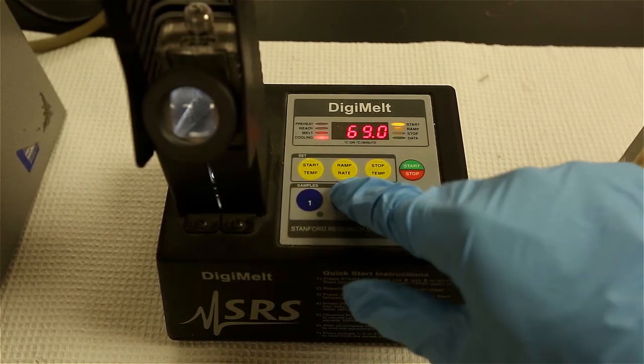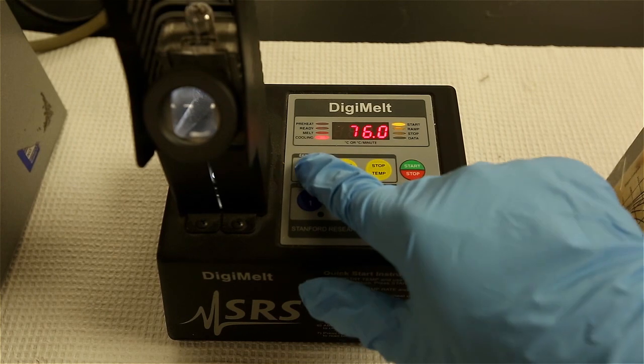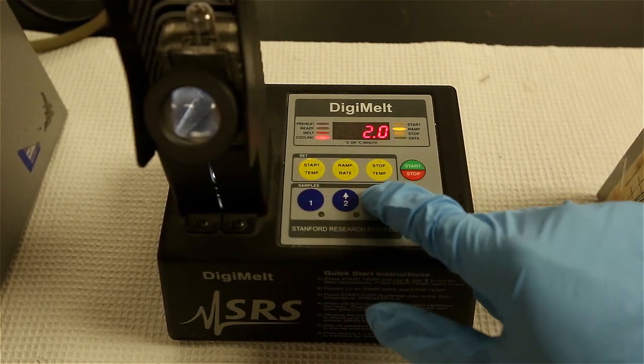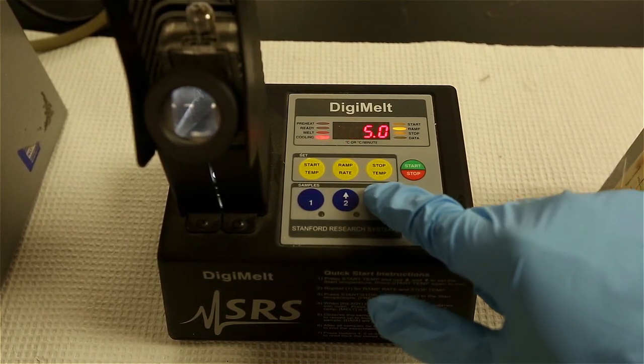When setting up the instrument for melting point analysis, you should use the temperature ramp at the lowest setting possible because you do not want to heat up the sample too quickly, otherwise you'll get an inaccurate reading.